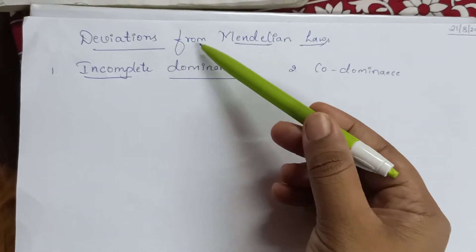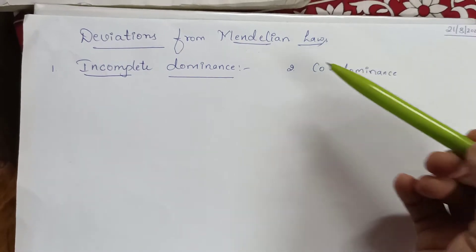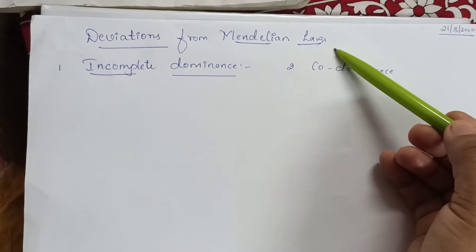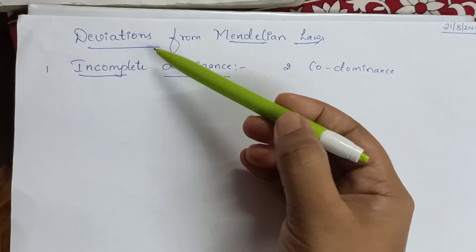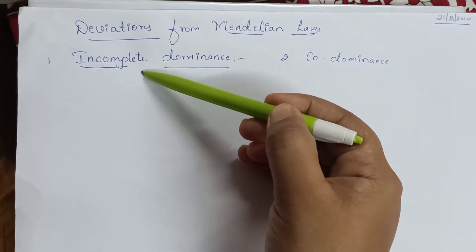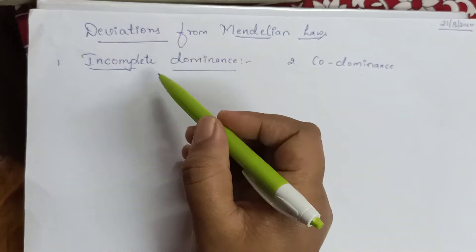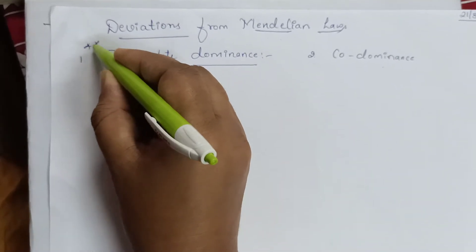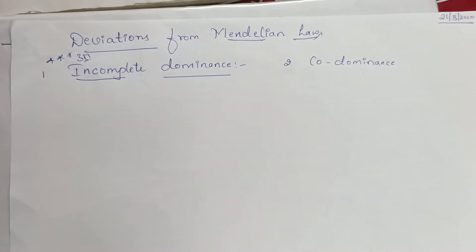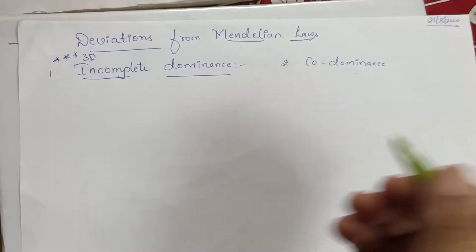One example for deviation from Mendelian law is incomplete dominance, and another is codominance. The examples that follow Mendelian's conditions are monohybrid and dihybrid cross, which we have already discussed. Now for deviations from Mendelian law, incomplete dominance is very important — one question is compulsory in examination from this topic.